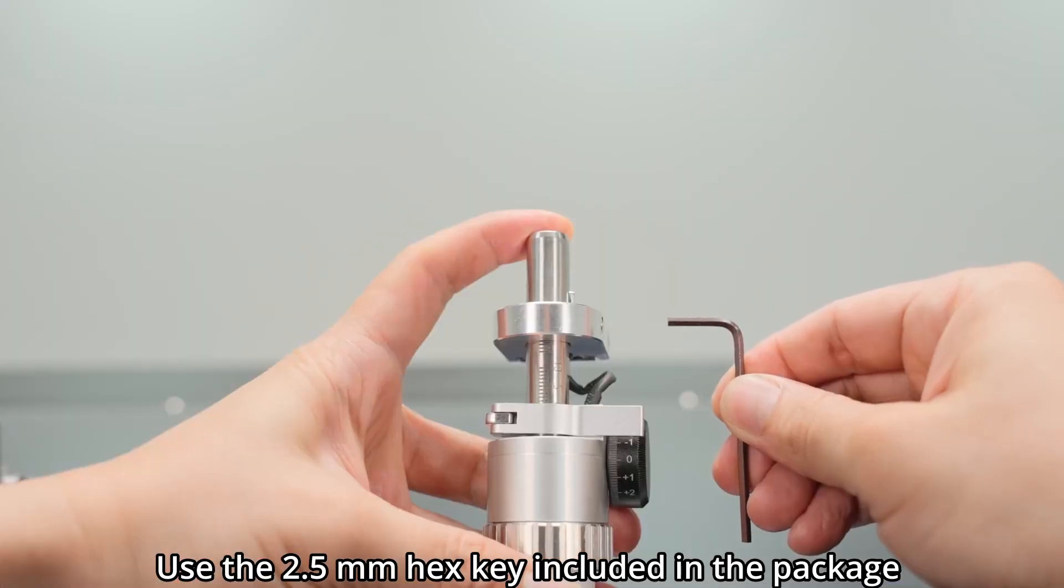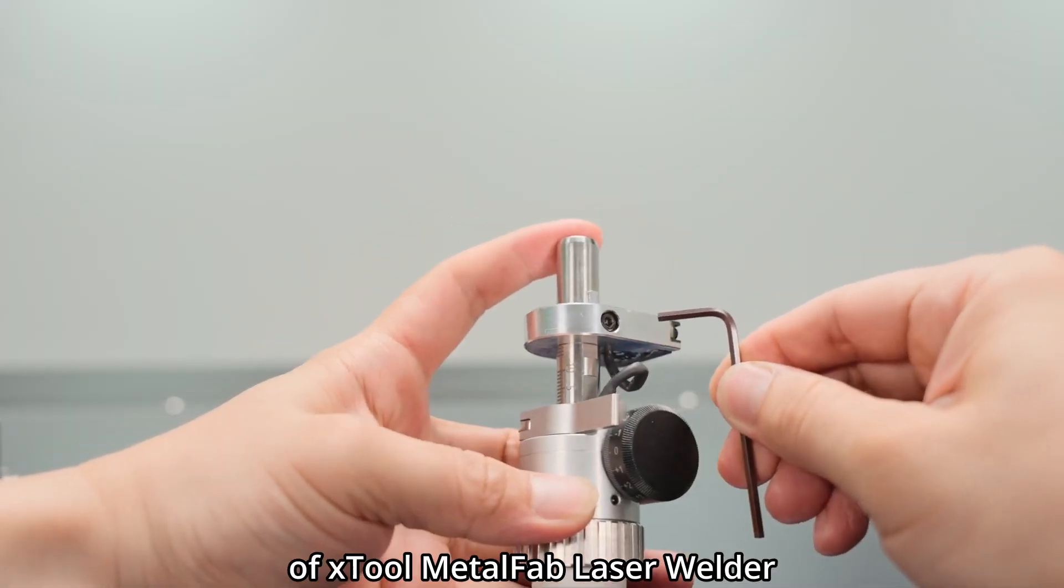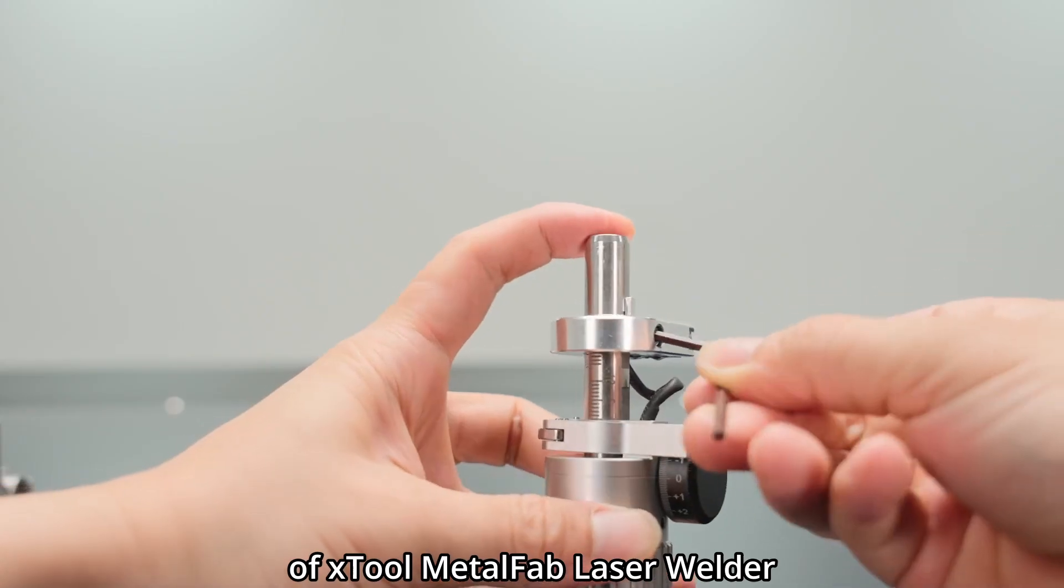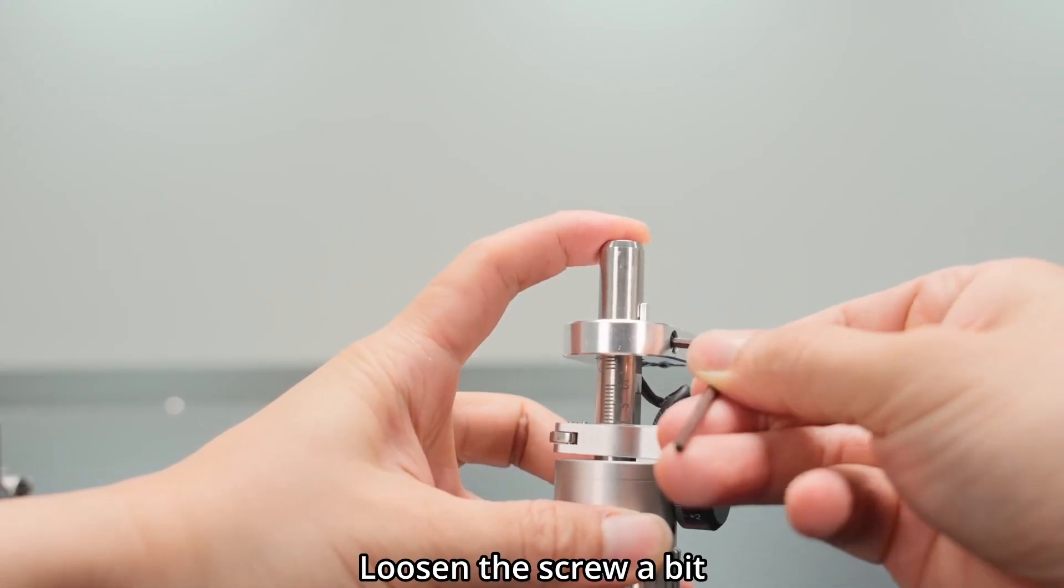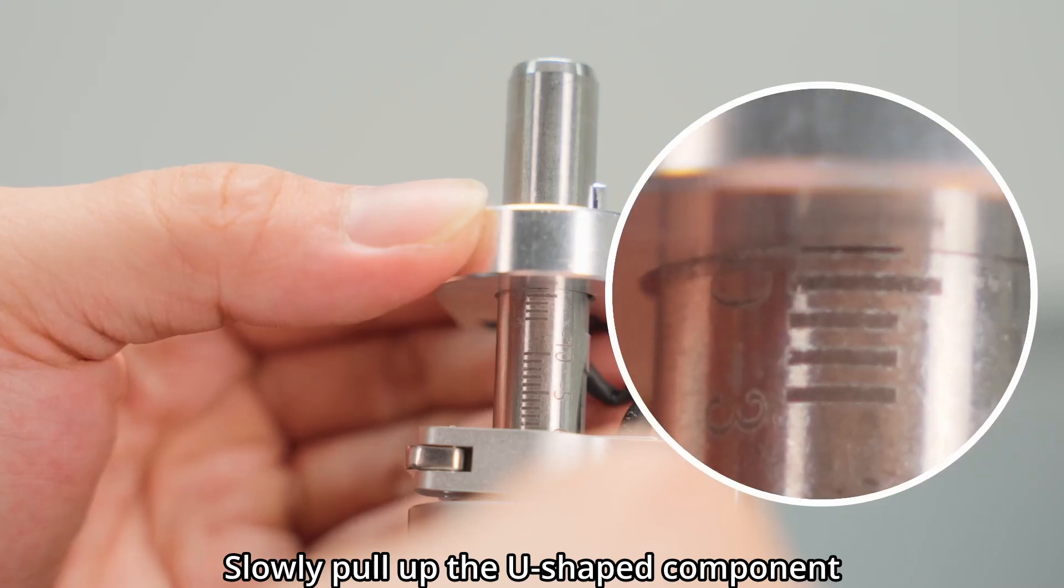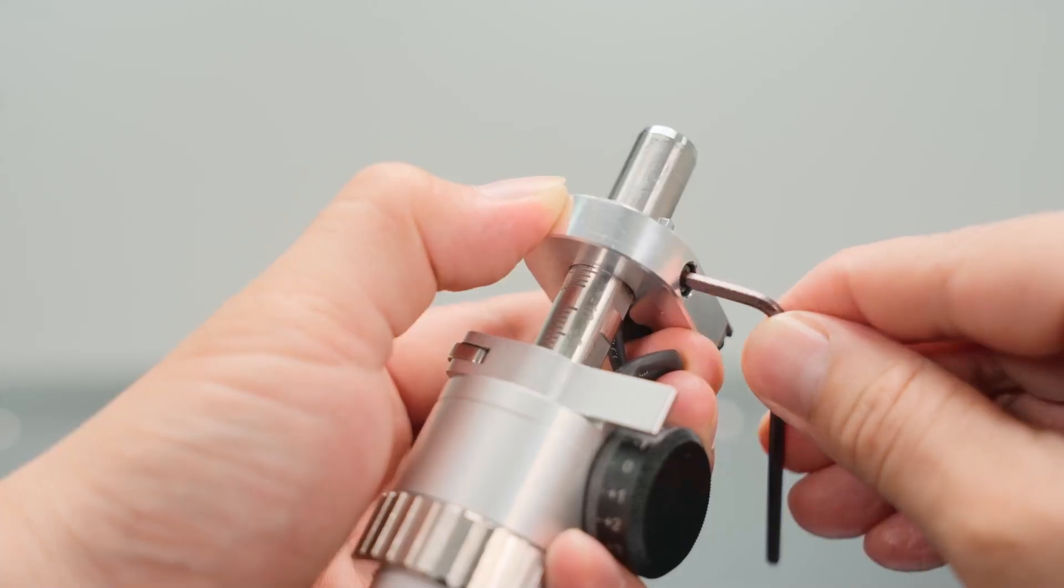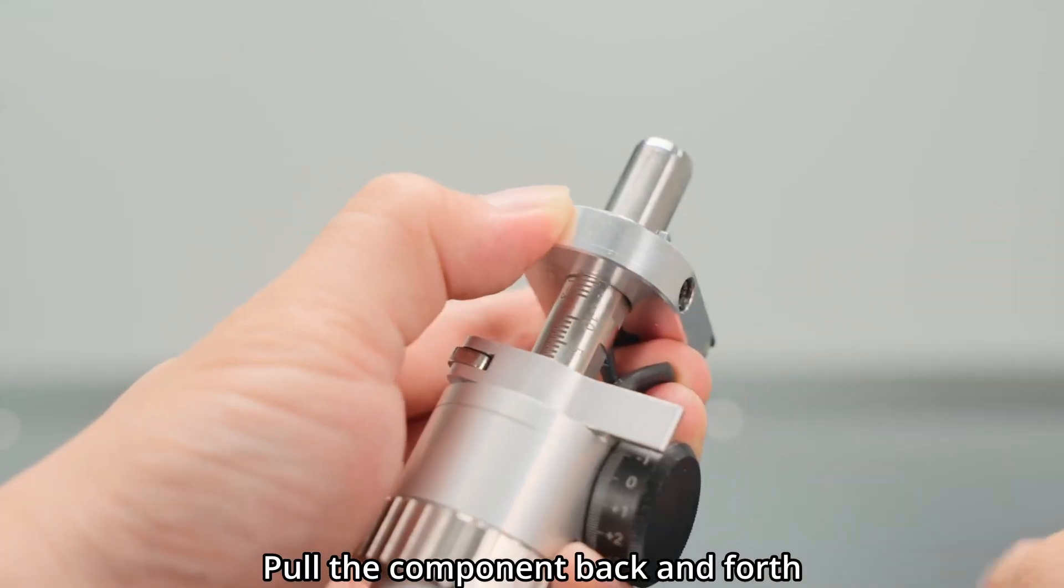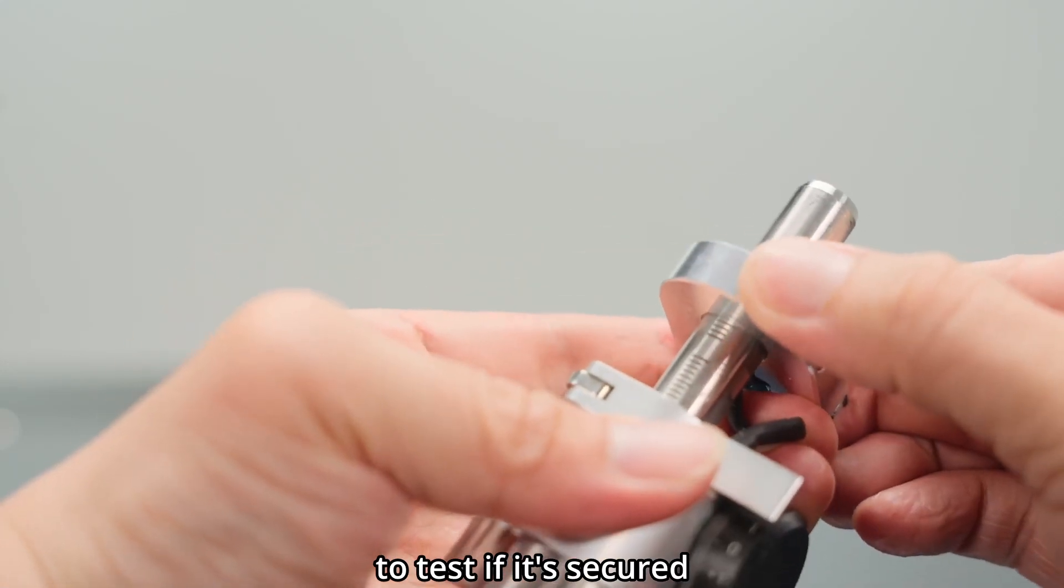Use the 2.5 mm hex key included in the package of X-Tool Metal Fab Laser Welder. Loosen the screw a bit. Slowly pull up the U-shaped component until its bottom reaches plus one. Tighten the screw. Pull the component back and forth to test if it's secured.